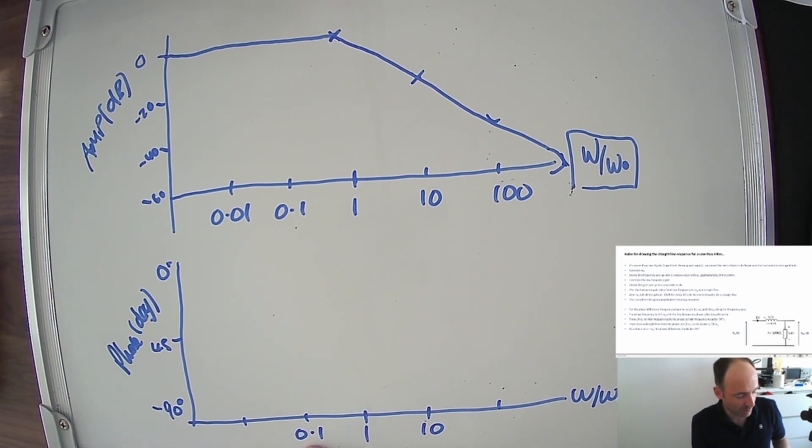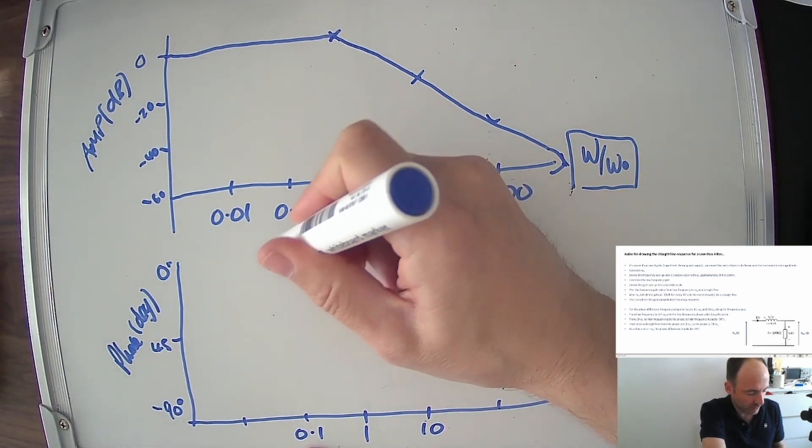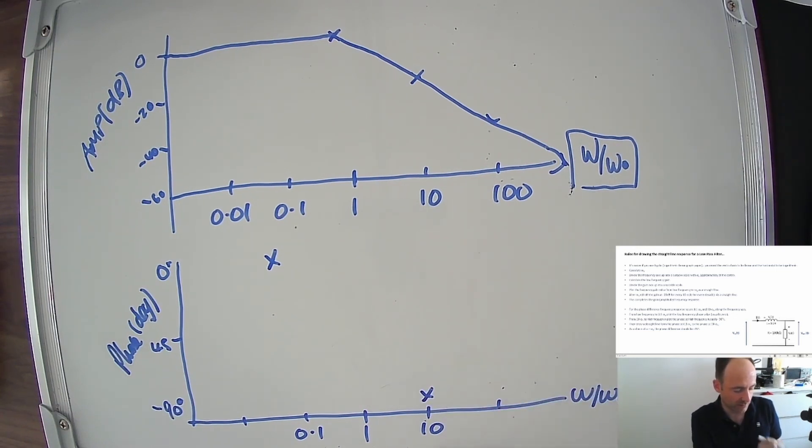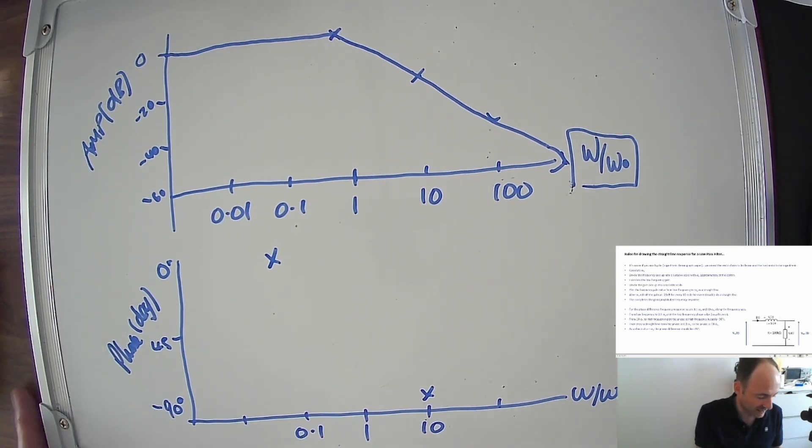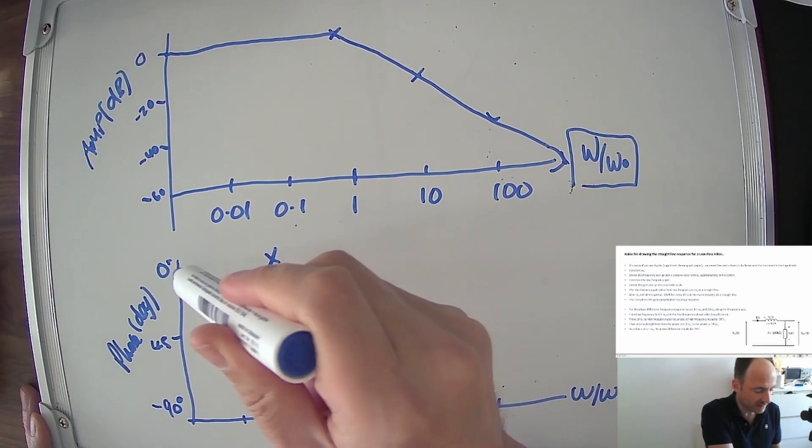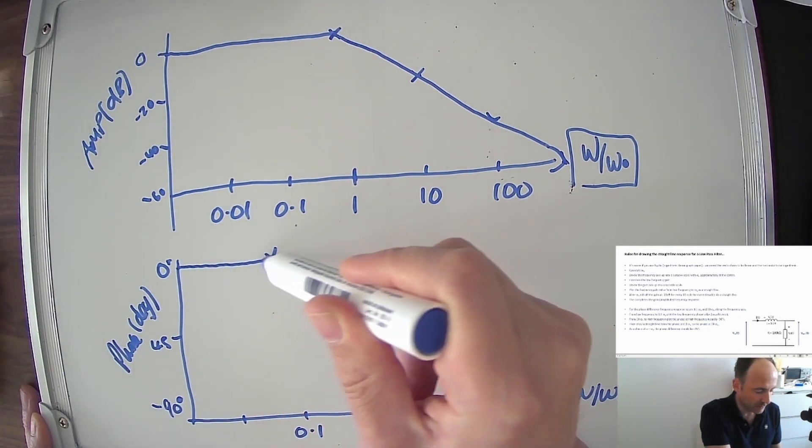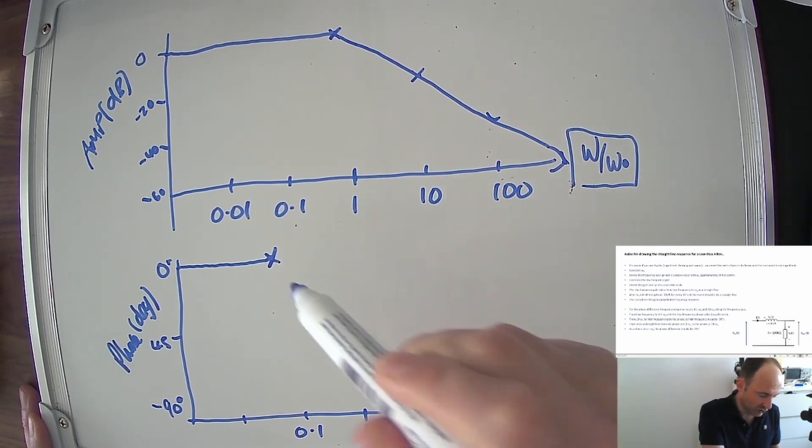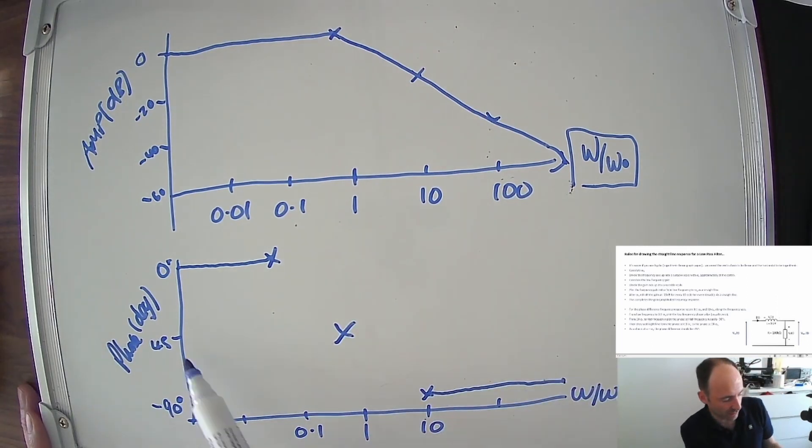Basically, it says locate 0.1 times the cutoff frequency and 10 times the cutoff frequency. At the 0.1 points, we're going to label zero degrees phase shift, and at the 10 times the cutoff frequency point, we're going to label minus 90 degrees phase shift. And then if we follow the rules, it basically says from the low frequency side, go up to that point. From the high frequency side, just stay at minus 90, and then join those two points together, recognizing that at the cutoff frequency, we should be at minus 45 degrees.